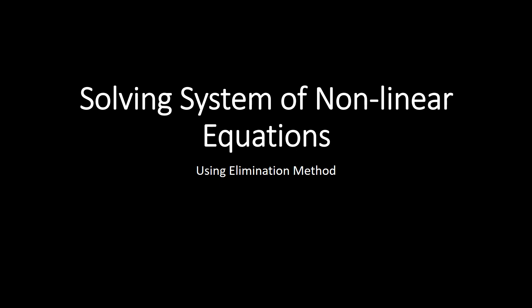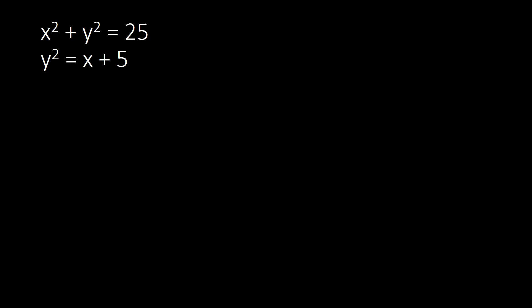Welcome to another lesson with teacher Jenny. This time we're going to talk about solving a system of nonlinear equations using the elimination method. Our system consists of x squared plus y squared equal to 25, which is a circle, and y squared equal to x plus 5, which is a parabola.